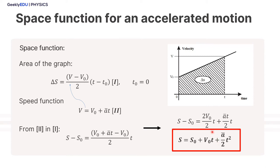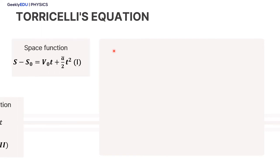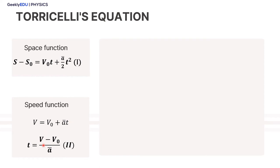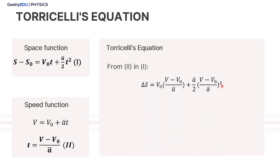Notice that all the functions we've seen so far depend on time. But what if you don't know the time? What if you don't have the time variable — for example, when trying to predict something? The solution comes with Torricelli's equation. If you take the space function and speed function, isolate time, and insert equation 2 into equation 1, then rearrange, you reach Torricelli's equation.